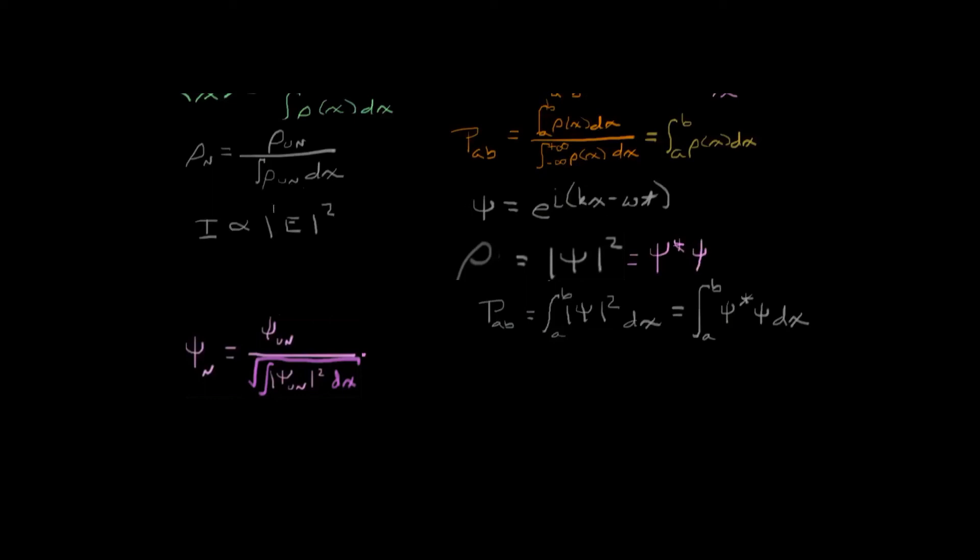So in summary, in the same way that the intensity is a reflection of the electric field, when we're looking at probability distributions of quantum-like material, we say that the probability is equal to the magnitude of the wave function squared.